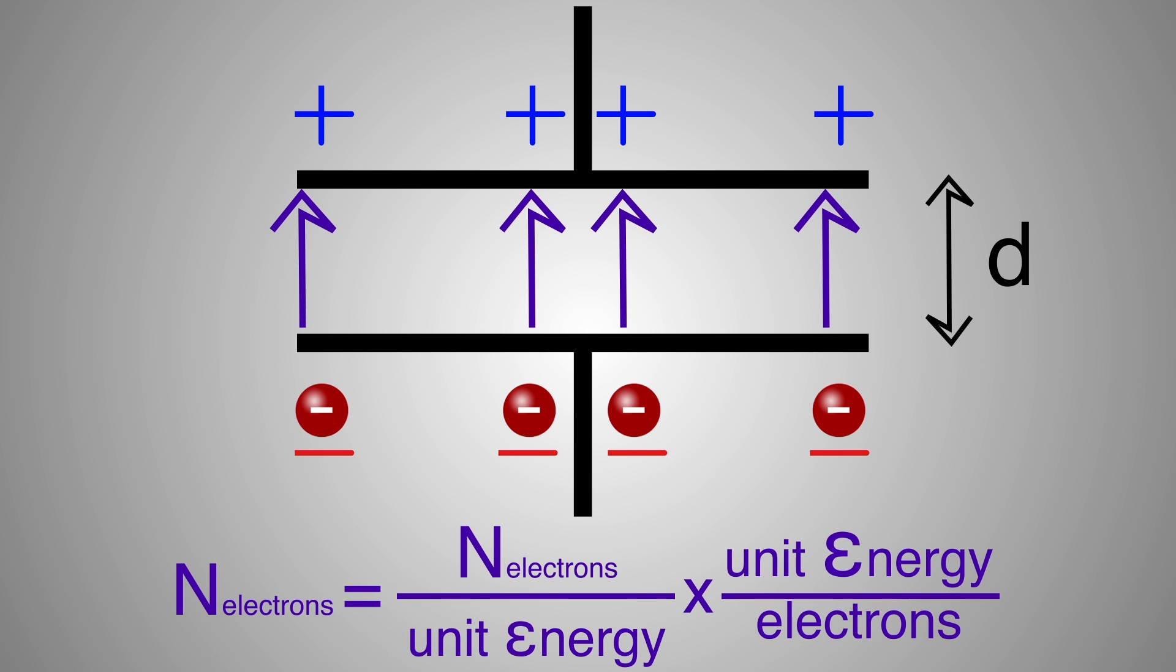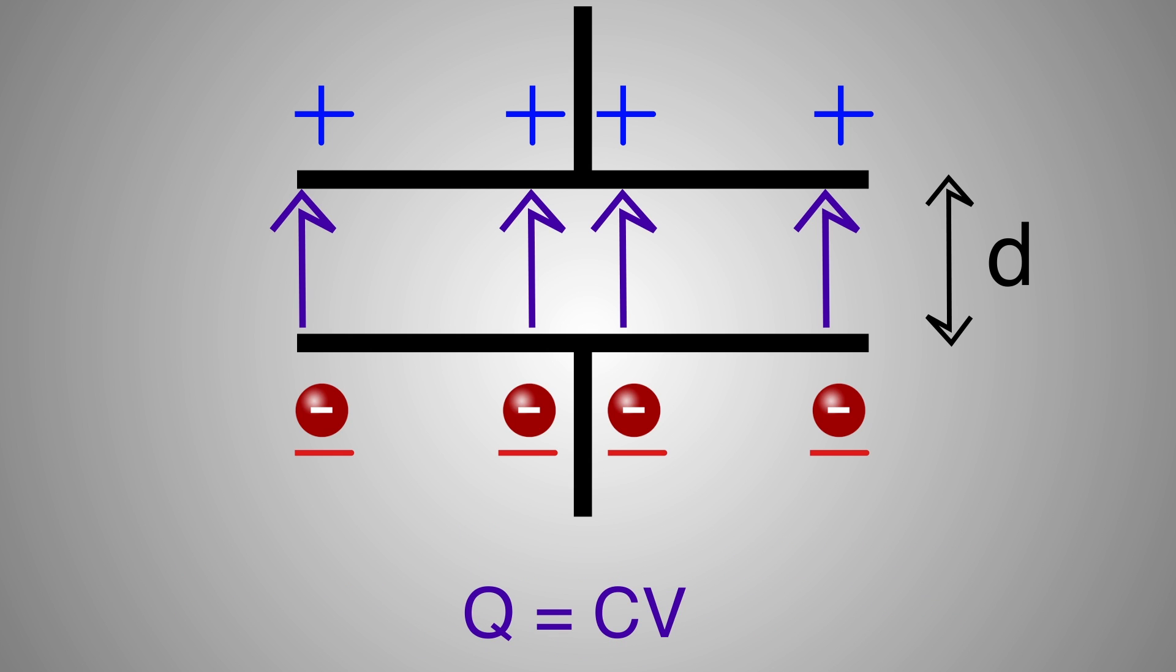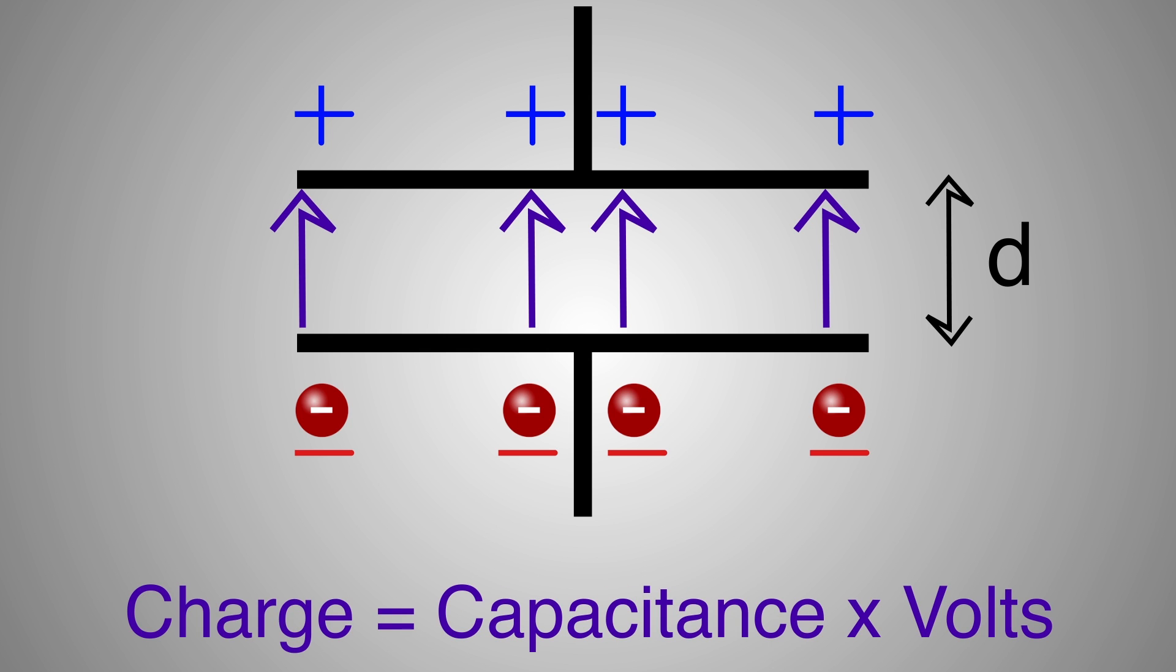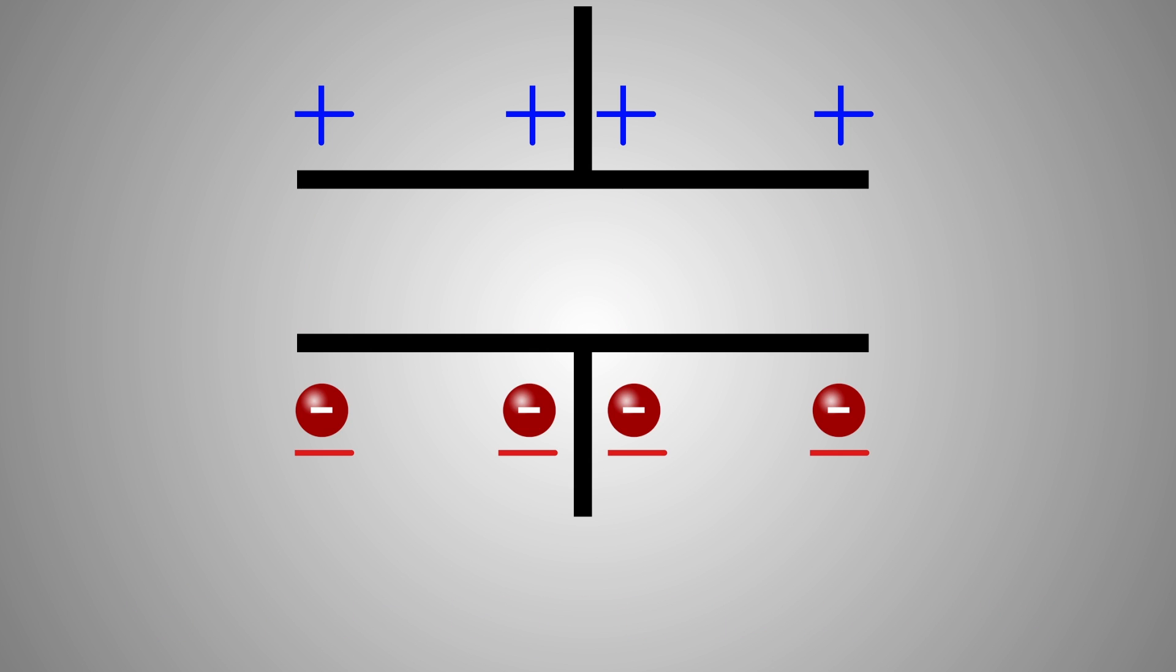Therefore, the number of electrons stored can be computed by multiplying the number of electrons that can be stored per unit energy times the energy per electron, which is the voltage. Q equals CV. Charge equals capacitance times volts. Capacitance is found by measuring the charge at each voltage and dividing that count by the voltage. It's a very simple definition.